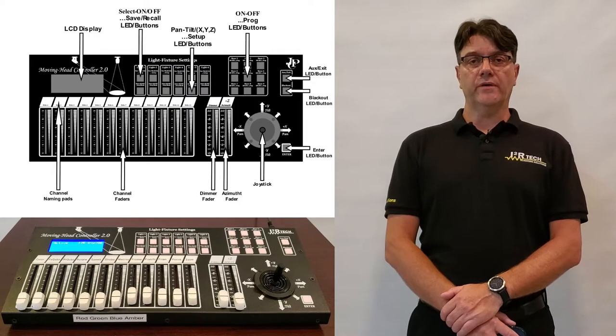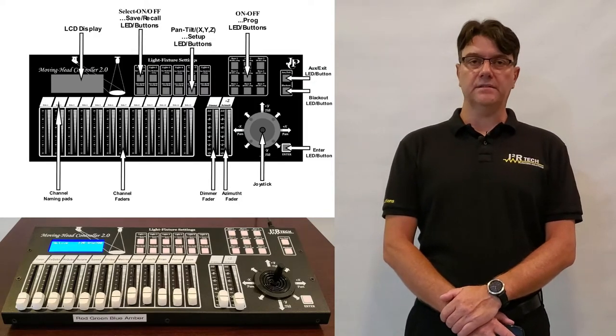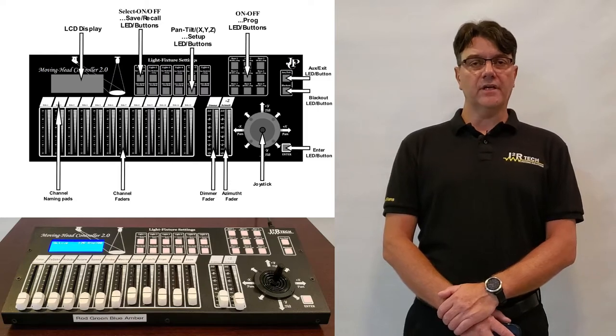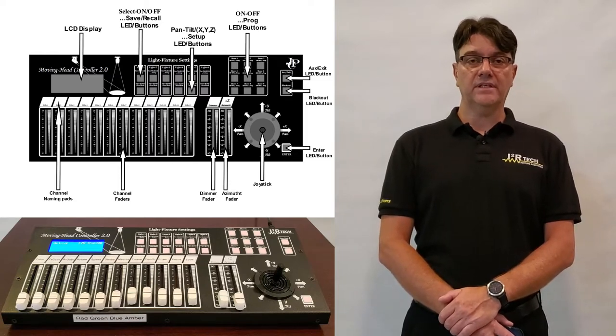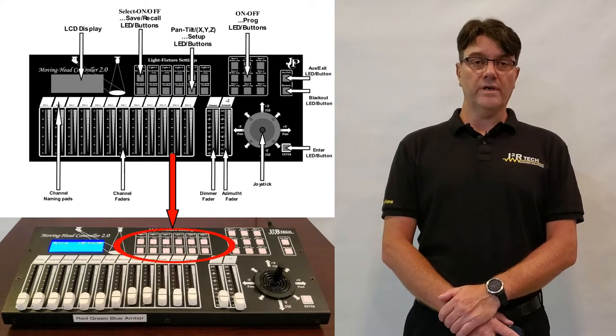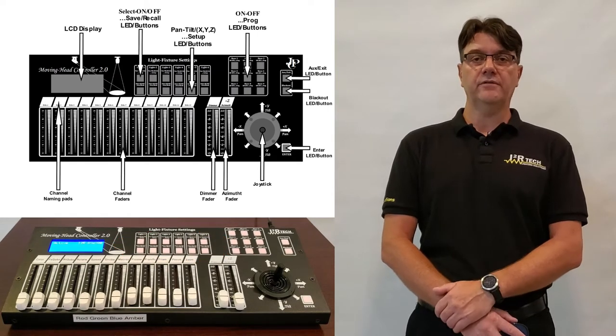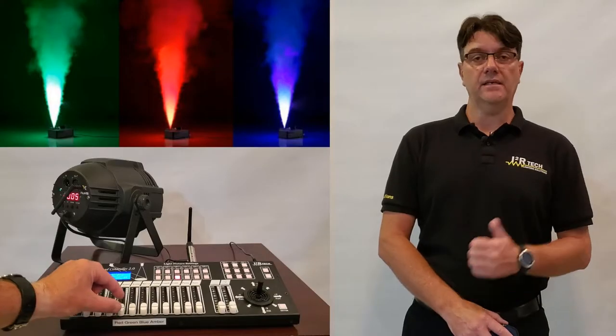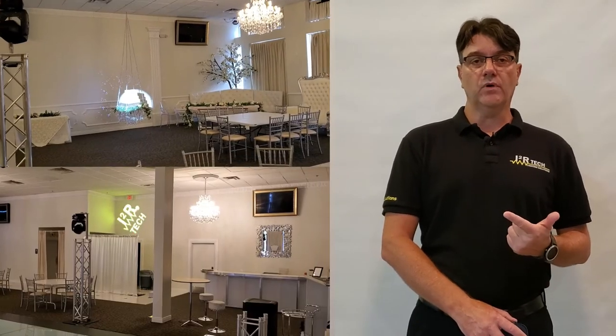Welcome to another I2R Tech Lighting Solutions tutorial video. The moving head controller 2.0 can be set up under a few different modalities. Modalities are like functional behaviors, and each one of the six available light groups can be set up as one of these modalities in a mixed configuration fashion. The three modalities are sliders mode, pan and tilt mode, and follow spot mode. They were already introduced and described in the sliders mode tutorial, so make sure you watch that one before you continue here.